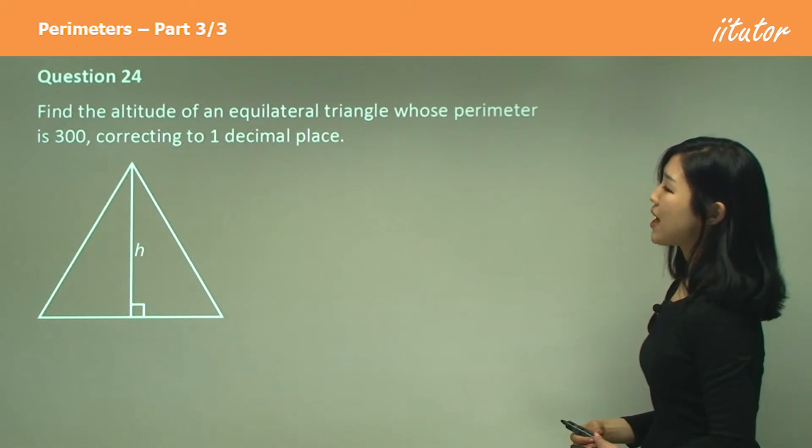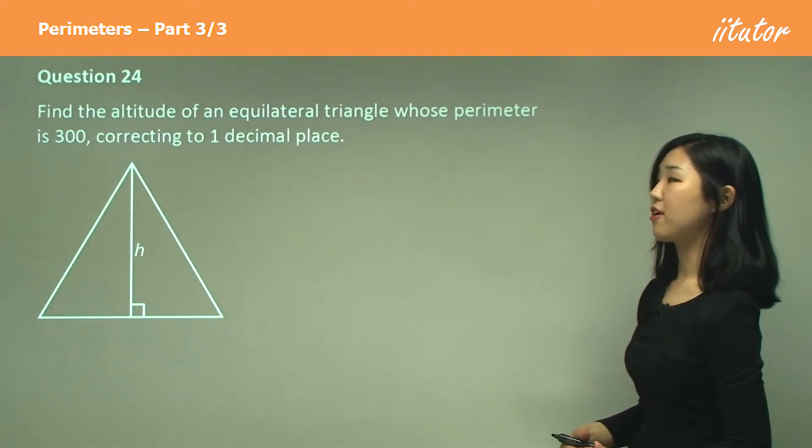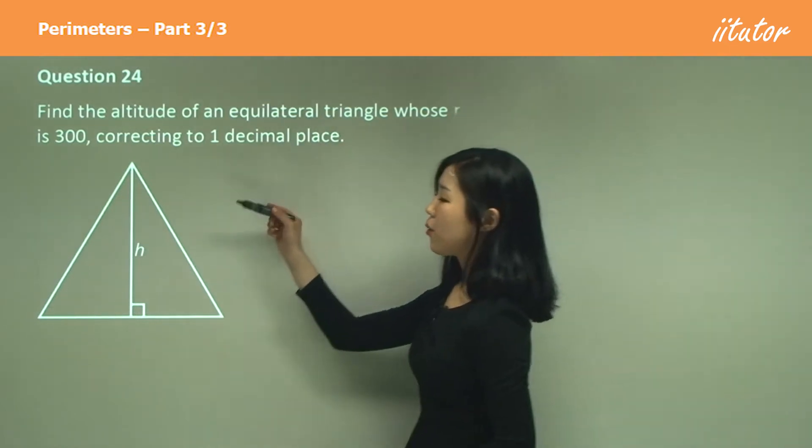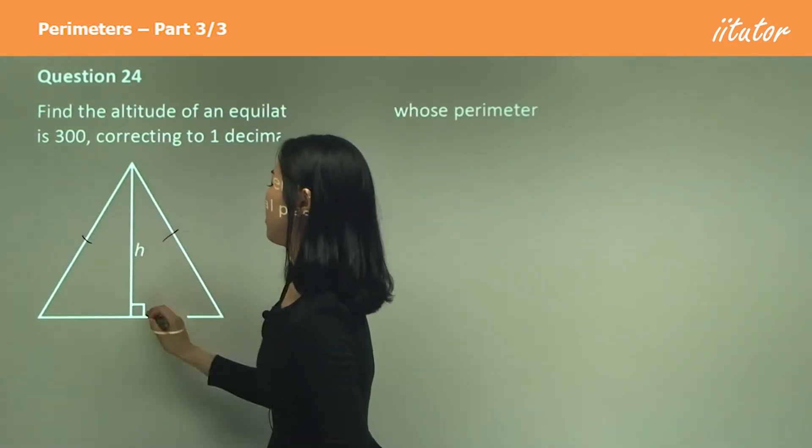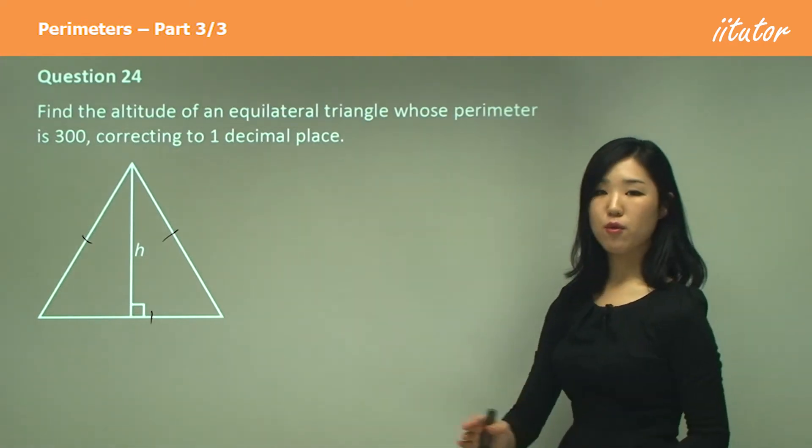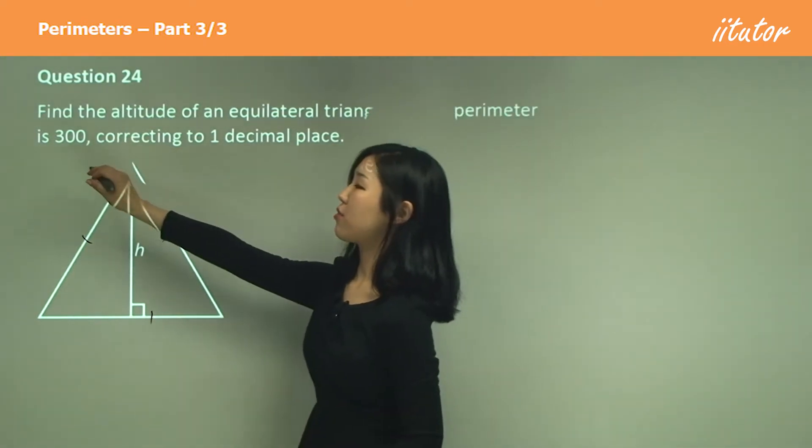Find the altitude of an equilateral triangle whose perimeter is 300. This is an equilateral triangle. They give us the perimeter first of all, which is 300.